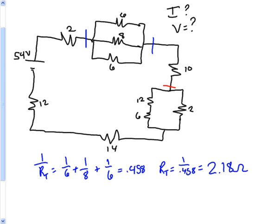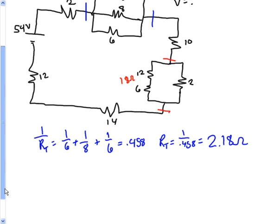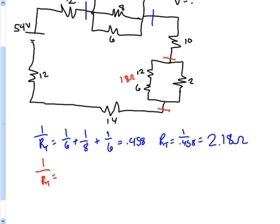In red, I'm going to do this next section. We have something interesting: the 12 and the 6 are in series with each other, so adding those together gives 18 ohms. Then we have that 18 ohms in parallel with a 2 ohm resistor. So 1/R_total = 1/18 + 1/2 = 0.556, which gives R_total = 1/0.556, giving us a 1.8 ohm equivalent resistor.